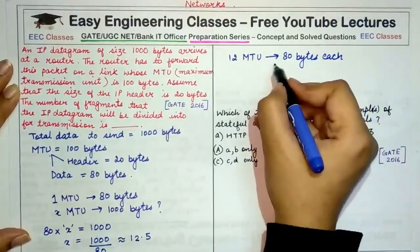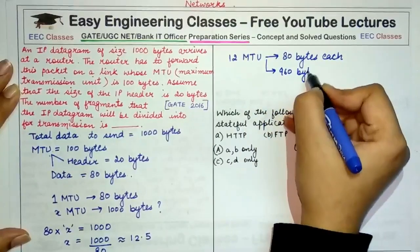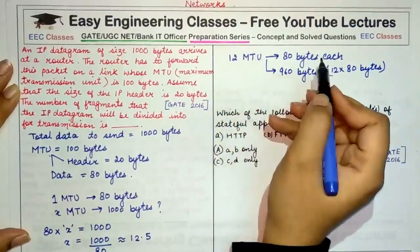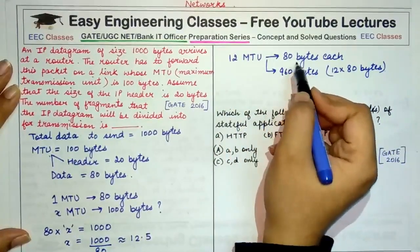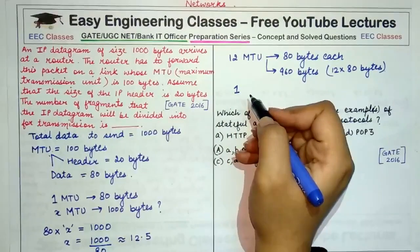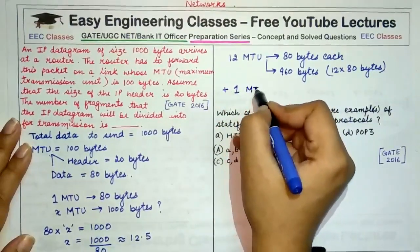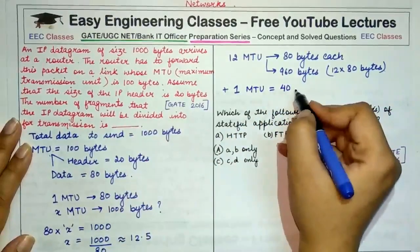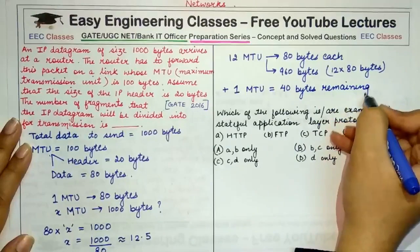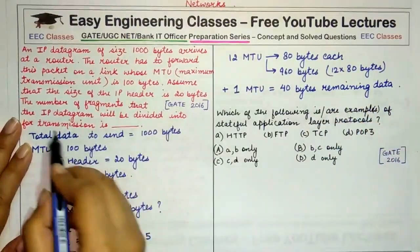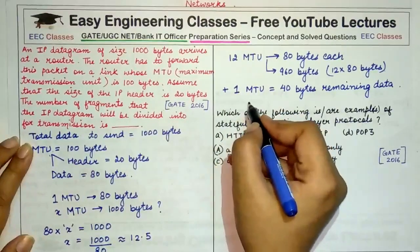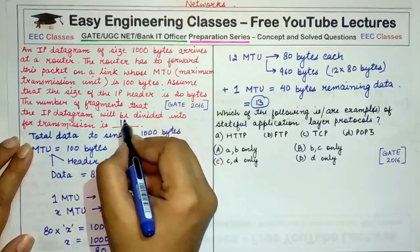12 MTUs would each transmit 80 bytes, giving a total of 960 bytes transmitted (12 × 80 = 960). One extra MTU carries the remaining 40 bytes, which is 1000 minus 960. So there is one additional fragment carrying 40 bytes of data plus the 20-byte header.